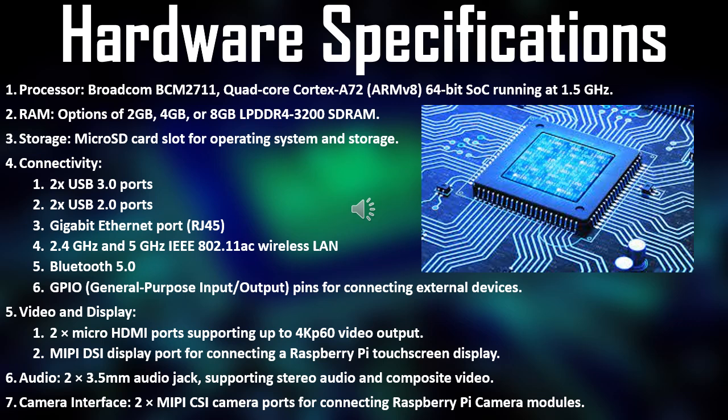In terms of video and display capabilities, Raspberry Pi is equipped with two micro HDMI ports that support up to 4K at 60fps video output. This allows users to connect the device to high-resolution displays or TVs for crisp and detailed visuals. Audio functionality is provided through two 3.5mm audio jacks, supporting stereo audio and composite video output. The camera interface comprises two MIPI-CSI camera ports, enabling users to connect Raspberry Pi camera modules.